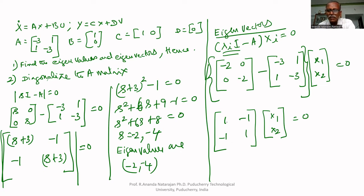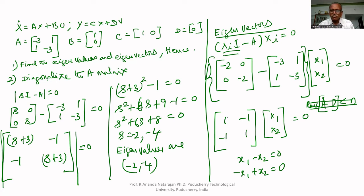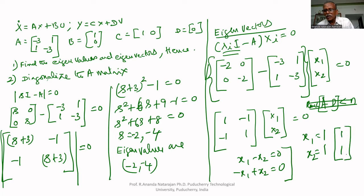The equations we get are: X1 minus X2 equal to zero, and minus X1 plus X2 equal to zero. Since the rank of the matrix is less than N, we get infinite solutions. So we assume X1 equal to 1, which gives X2 equal to 1. Therefore, the eigenvector for lambda equal to minus 2 is [1, 1].